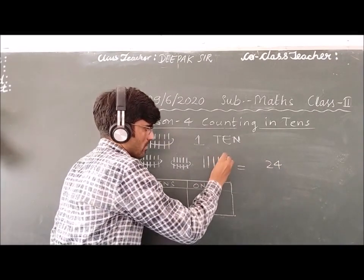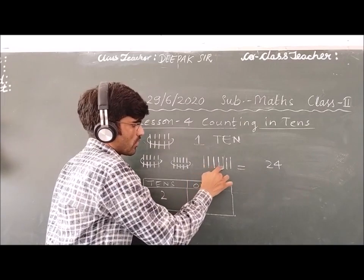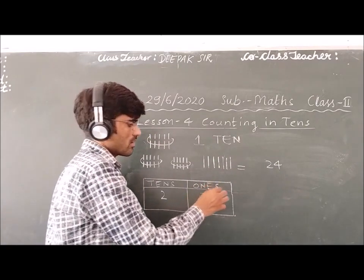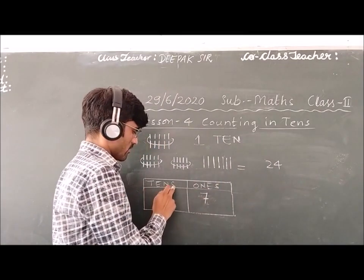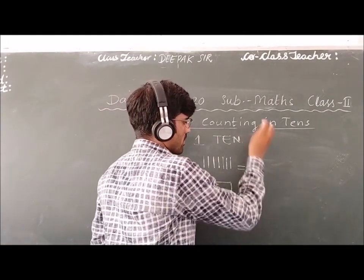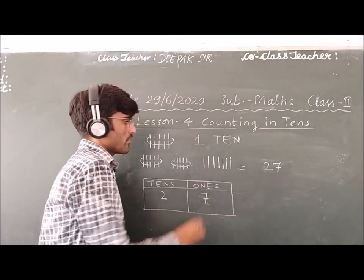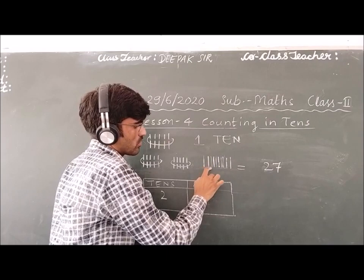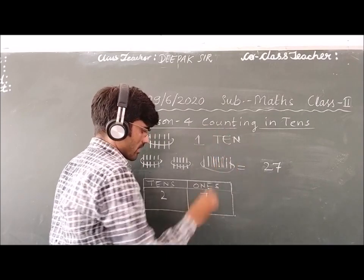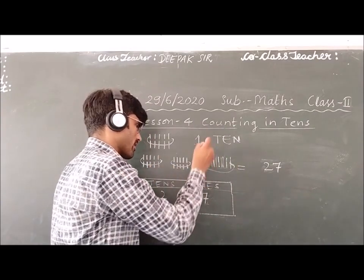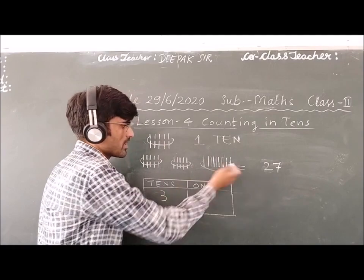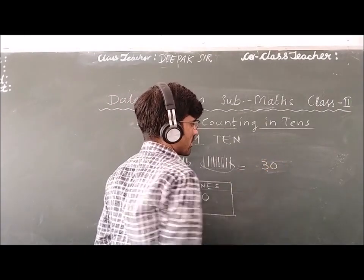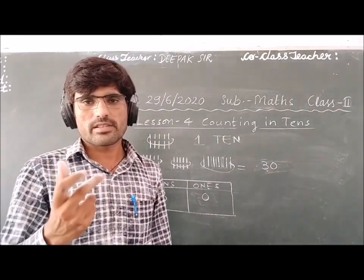Like this, if you have 7 ones — one, two, three, four, five, six, seven — and we have 2 tens and 7 ones, it means total will be 27. If you have 1, 2, 3 more sticks, and total sticks will be 10, making another bundle. So we have 1 ten, 2 ten, 3 ten — the tens will be 3 and the ones are 0, so this will be 30.